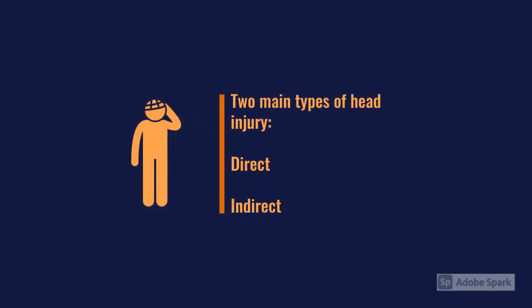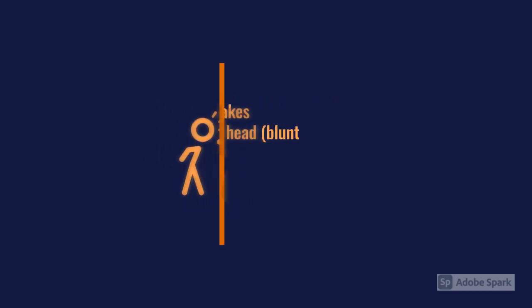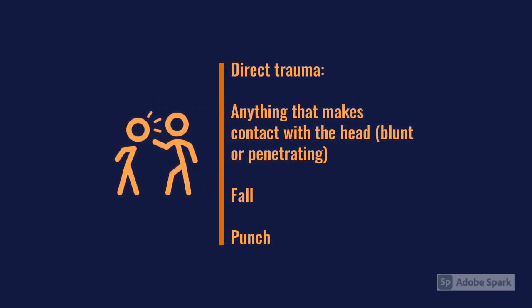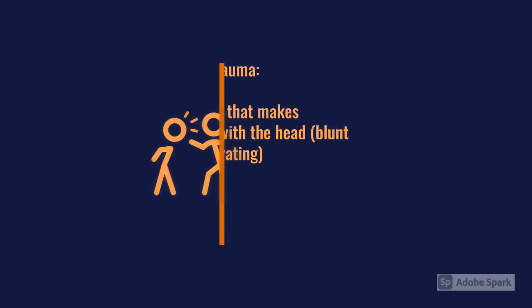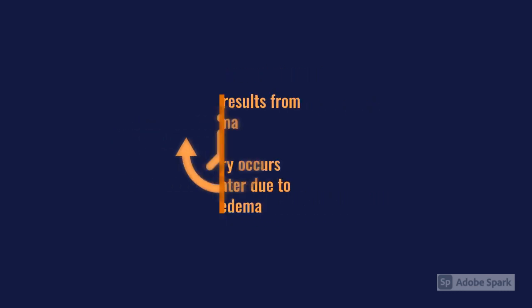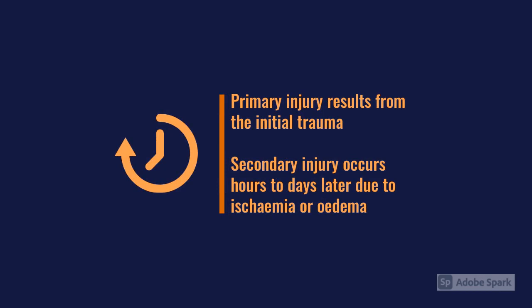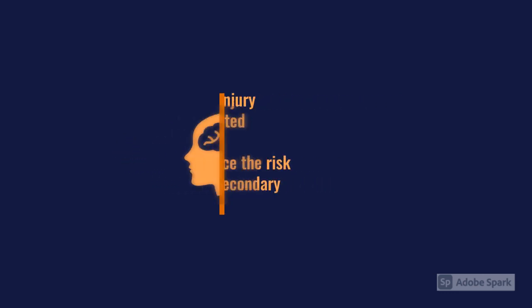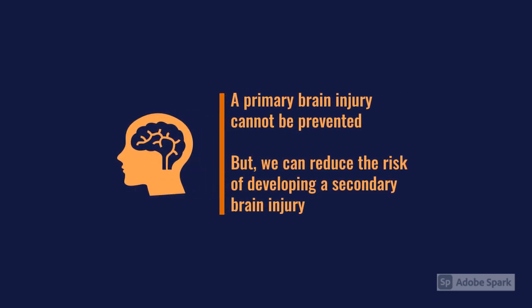Head injuries have two main causes: direct trauma to the head caused by an injury, a fall, or a punch, or indirect trauma from rapid acceleration or deceleration such as in a road traffic accident. Your primary brain injury occurs as a result of the initial trauma. Secondary injury is caused by edema and pressure build-up. There's nothing we can really do about that primary injury, so management is geared towards preventing that secondary injury.